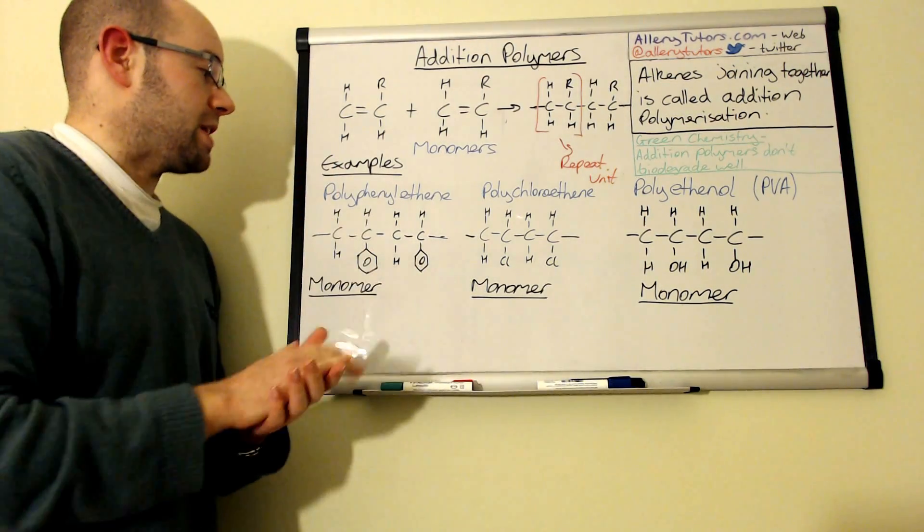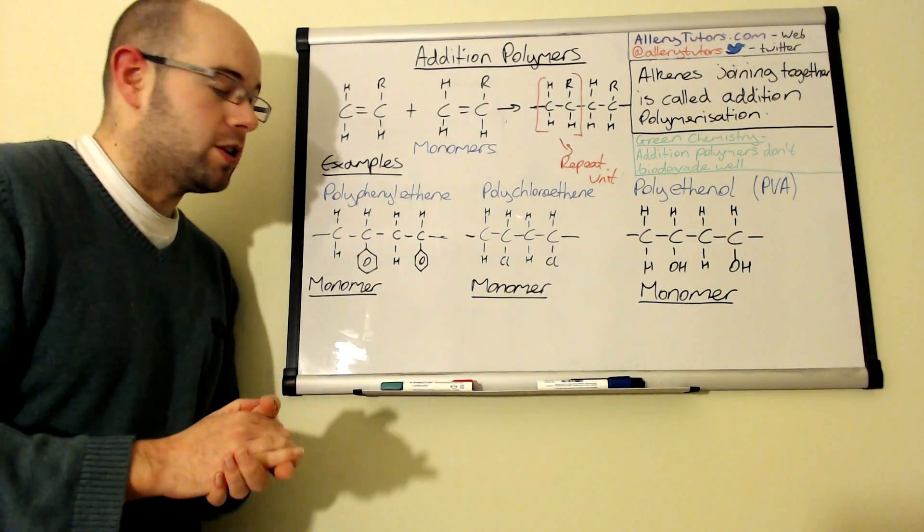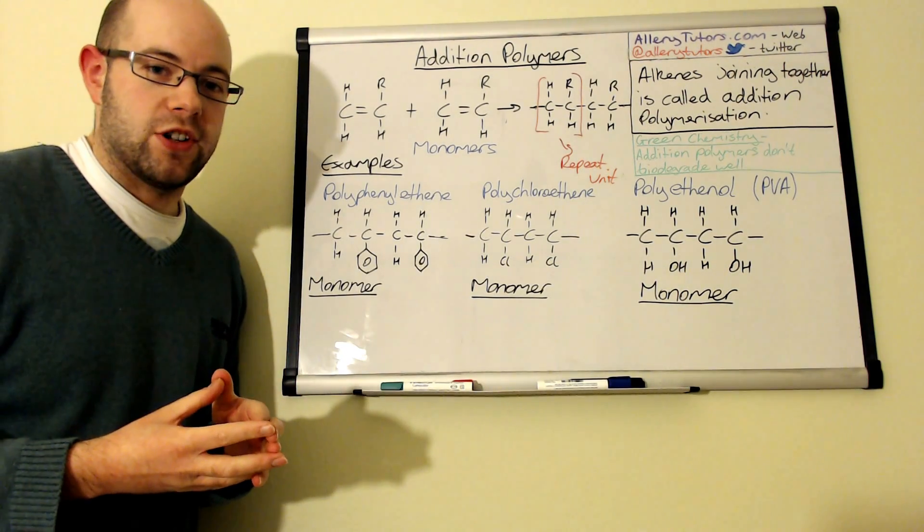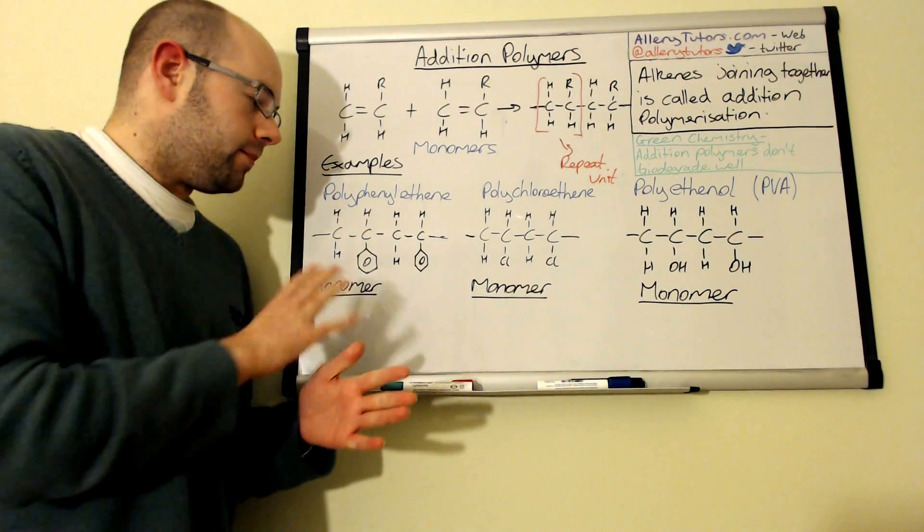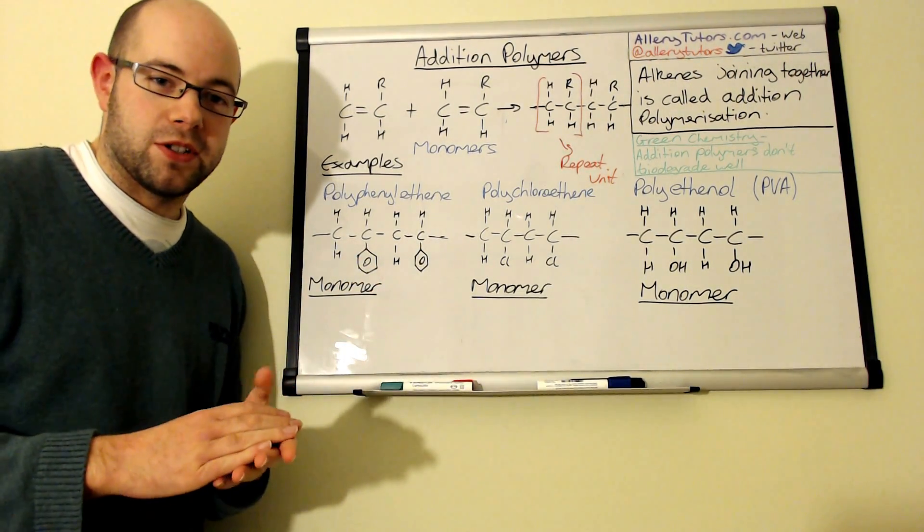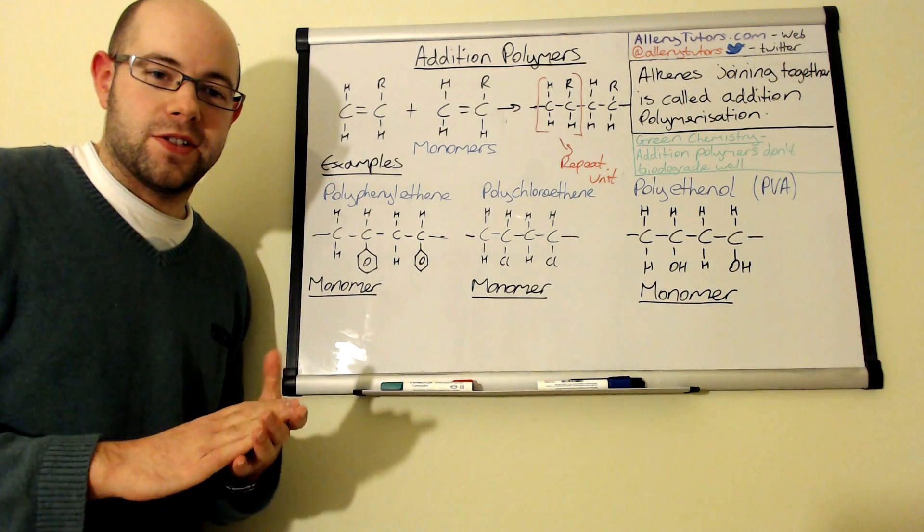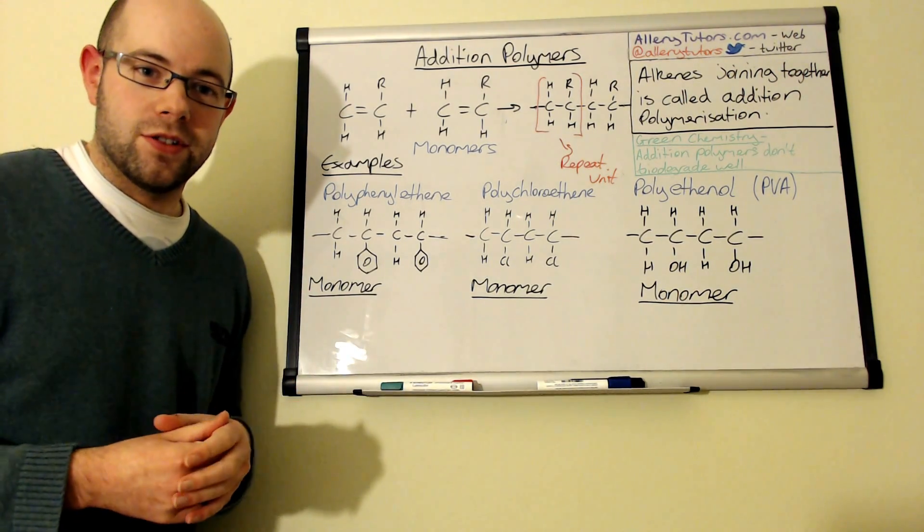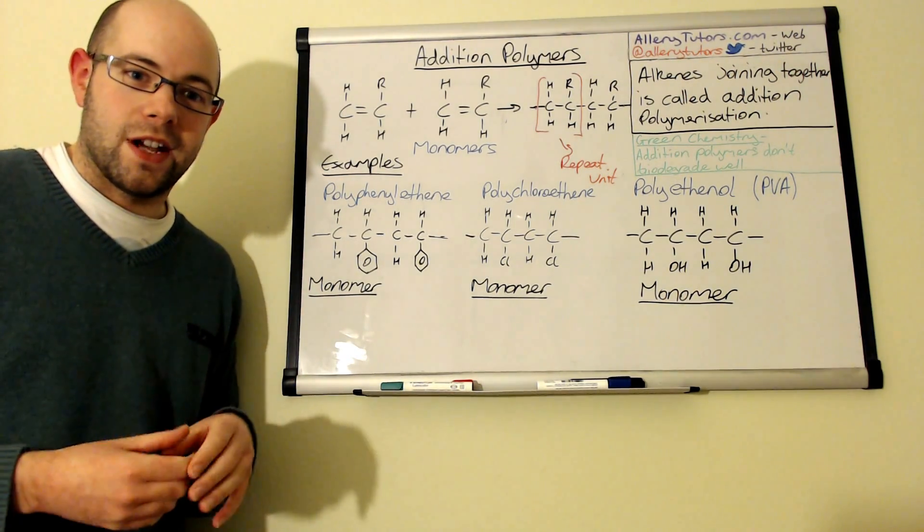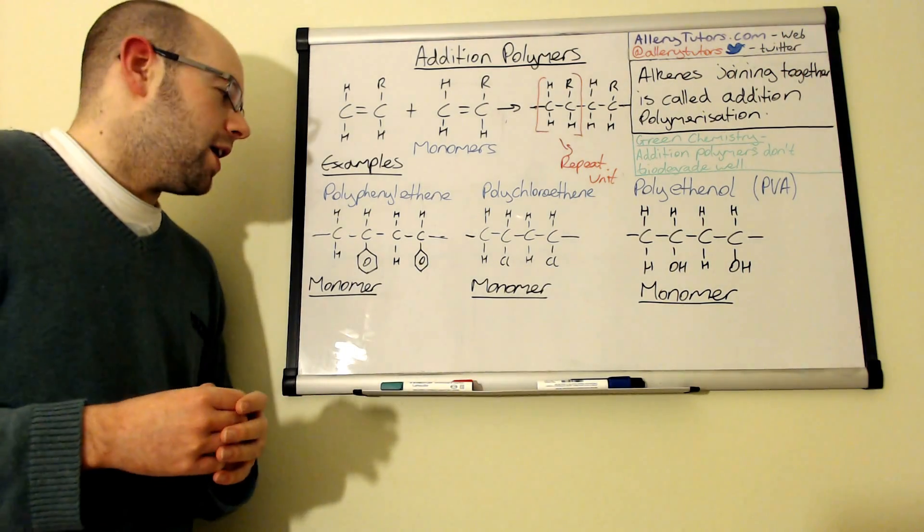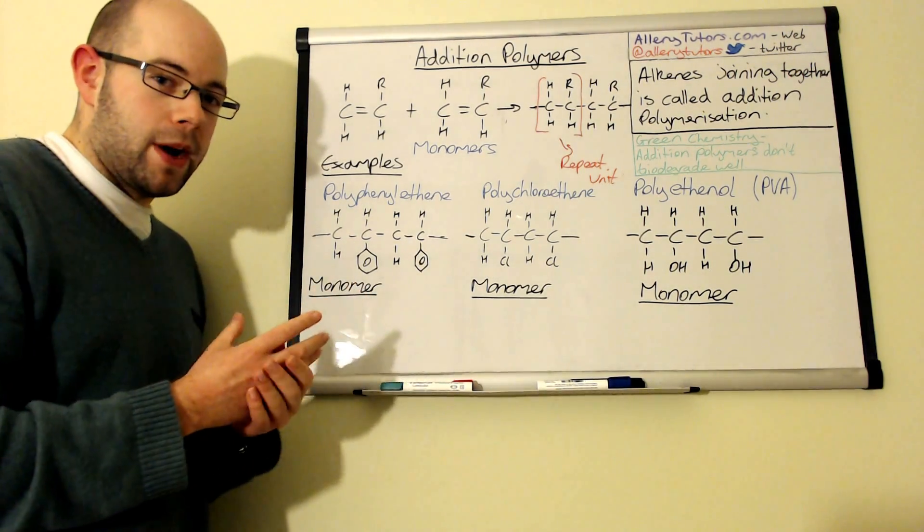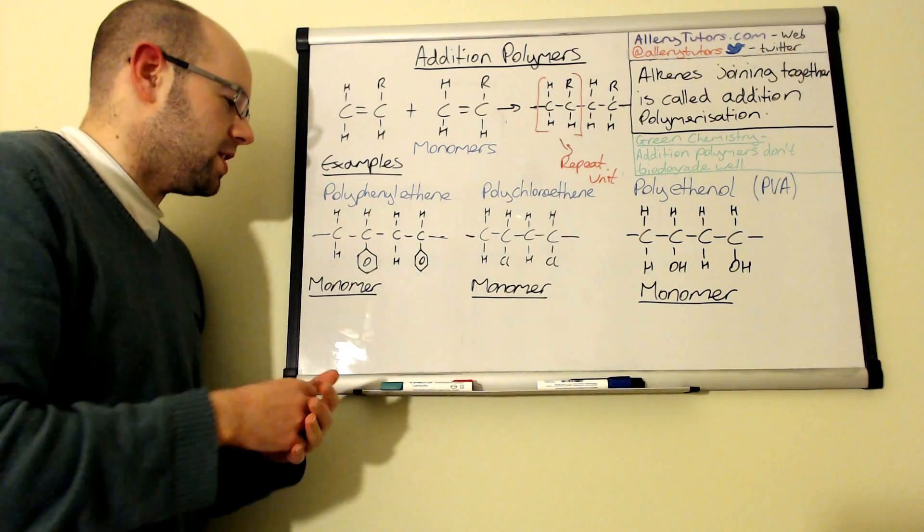We've got some examples here. We've got something called polyphenyl ethene and polyphenyl ethene is actually another name for polystyrene which is the plastic that you use to normally package electrical goods and food cartons. It's a good insulator so really lightweight as well and quite cheap to make.